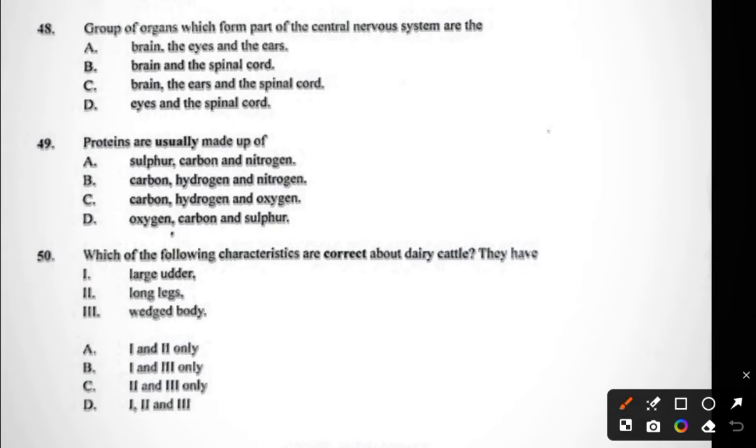Question forty-nine: proteins are usually made up of sulfur, carbon and nitrogen; carbon, hydrogen and nitrogen; carbon, hydrogen and oxygen; or oxygen, carbon and sulfur. The answer is A, sulfur, carbon and nitrogen. Question fifty: which of the following characteristics are correct about dairy cattle? (i) Large udder, (ii) long legs, (iii) wedge-shaped body. Dairy cattle produce milk, so they have large udders, they also have long legs, and they also have a wedge-shaped body. So question fifty, the answer is D.